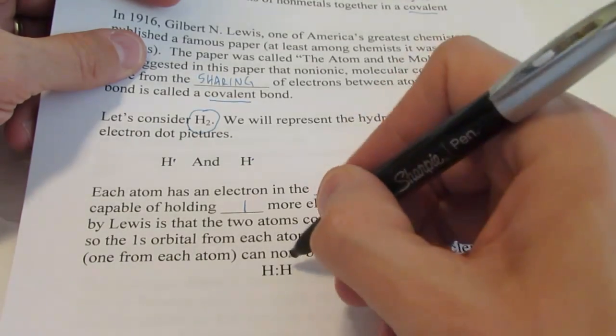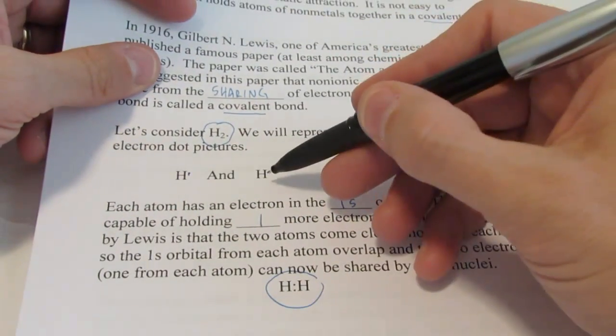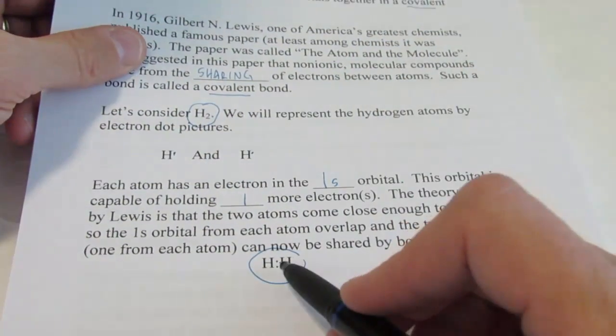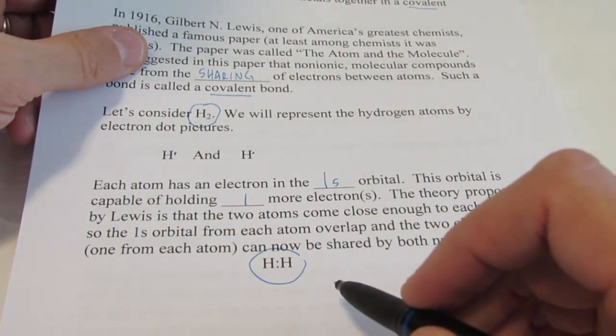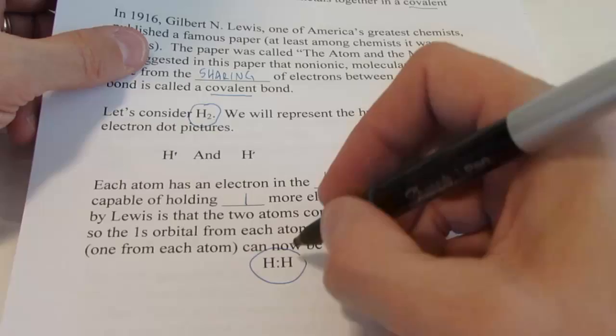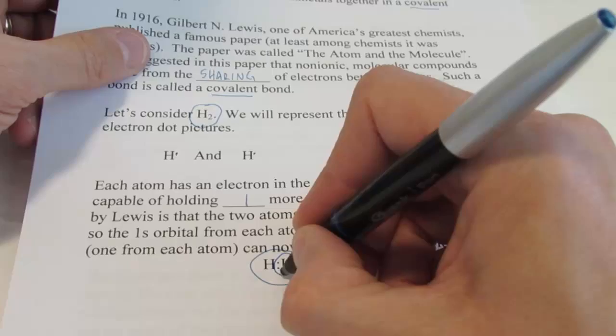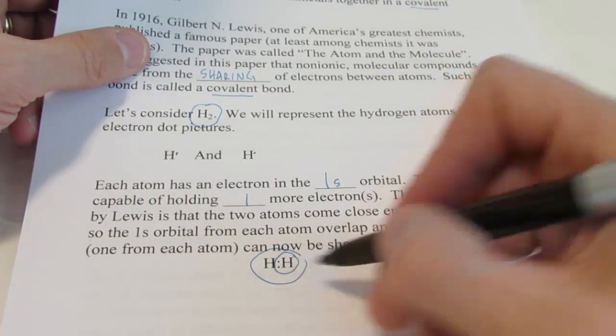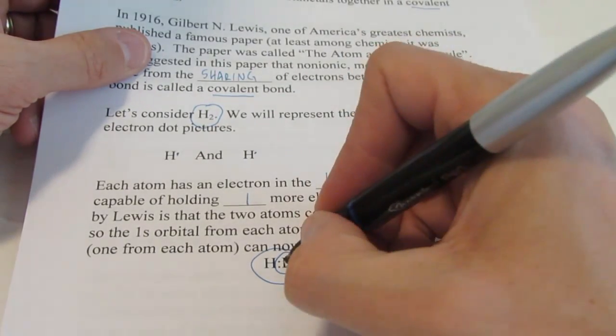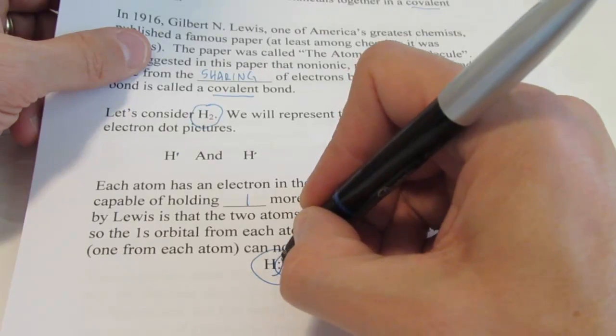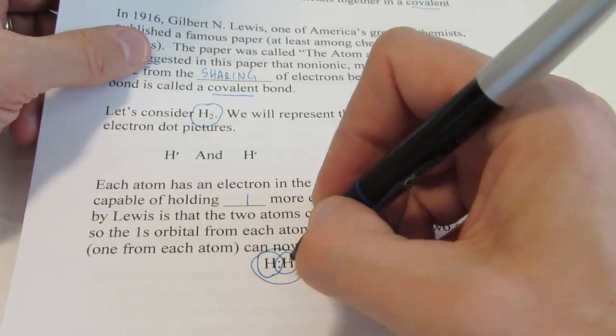The theory proposed by Lewis is that the two atoms come close enough to each other, so the 1s orbitals, one from each atom, overlap. And the two electrons, one from each atom again, can now be shared by both nuclei. So we can envision these coming close enough to each other, so they share a pair of electrons.